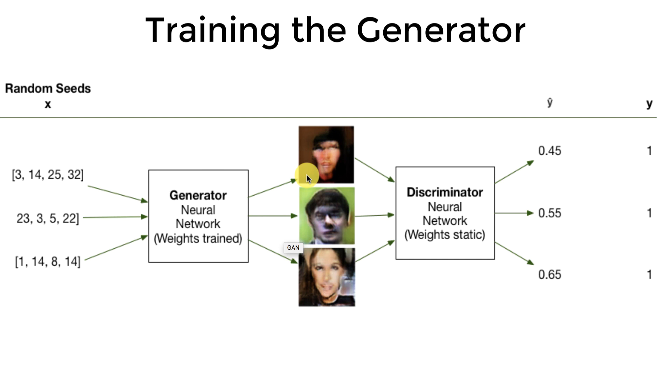But we're going to send those into the generator. The generator is going to create three random faces. Now, the generator may not be very good at first and it's going to get better and better, but the point is the discriminator is going to get better and better at saying, aha, these faces, they're not real. The discriminator is going to take these in and it's going to give predictions. It's going to say, okay, that face, 45 percent. This face, 55 percent. The last one, okay, that looks a little better, 65 percent. These are the Y hats.